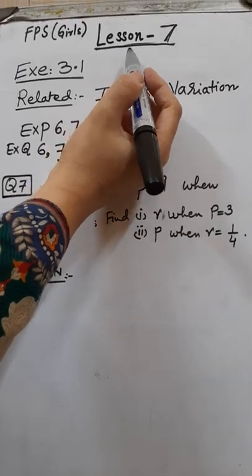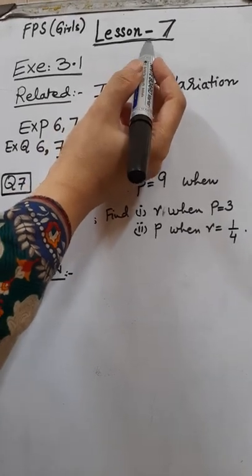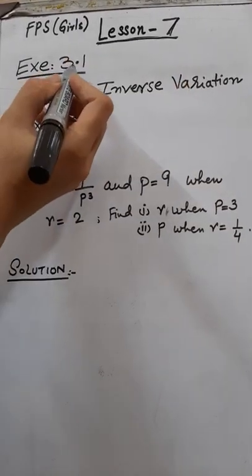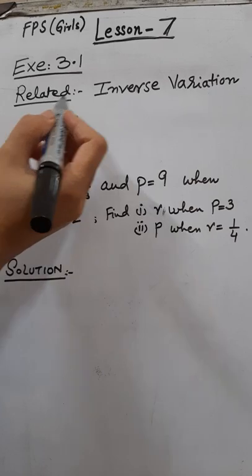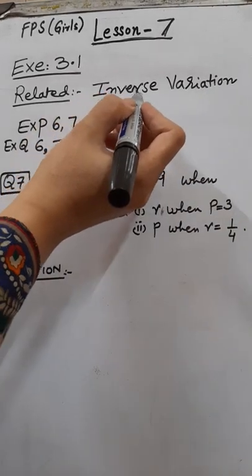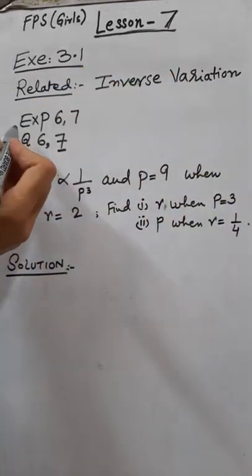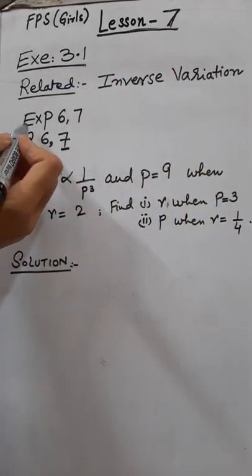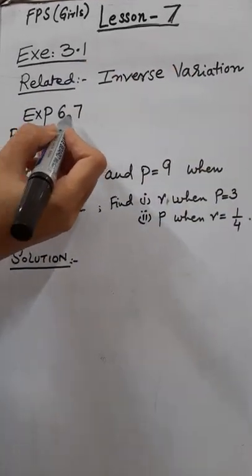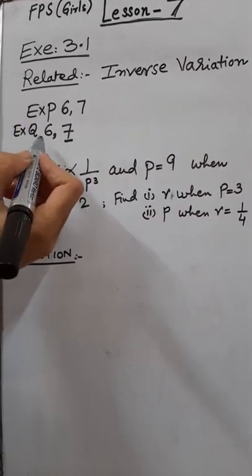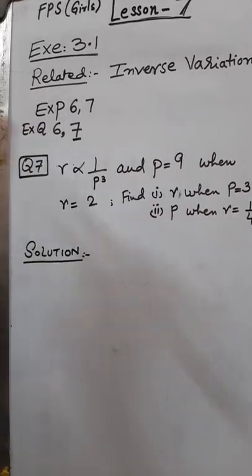Now, lesson number 7, exercise 3.1 related to the inverse variation — solutions are example number 6 and 7 and exercise question 6 and 7.